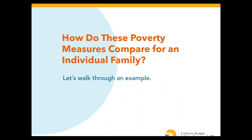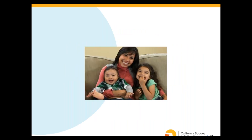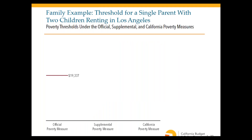Let's walk through an example of how these three measures work for a mom with two kids who rents an apartment in Los Angeles. First, let's look at the poverty thresholds. The official poverty threshold for this family is just over $19,000. The supplemental and California poverty thresholds are higher because they account for housing costs in Los Angeles. The thresholds differ slightly between the supplemental and California measures because the CPM is based on LA County while the SPM covers the larger Los Angeles-Orange County metropolitan area.